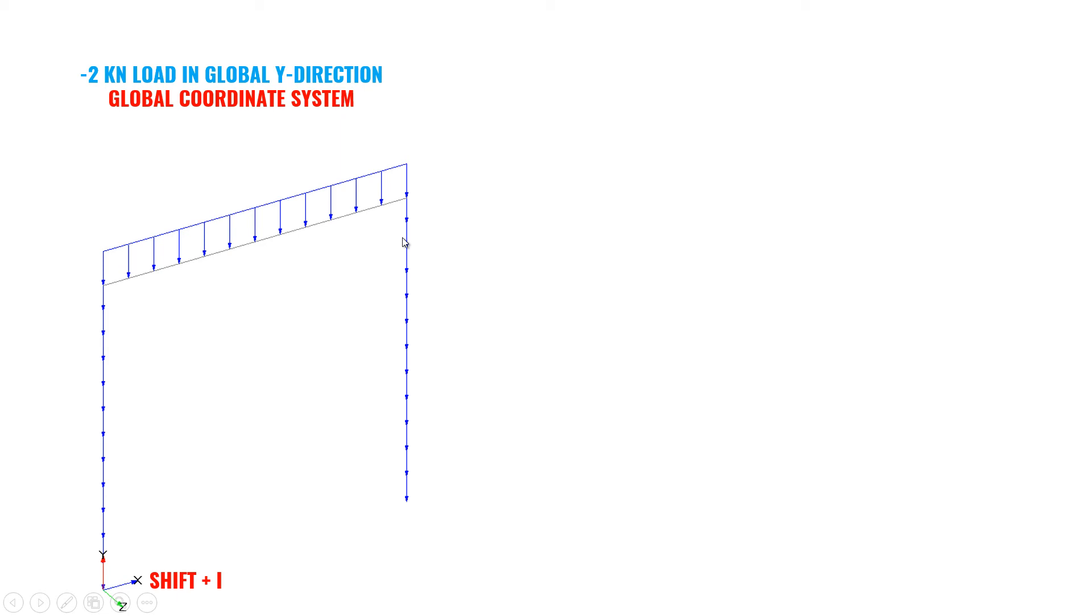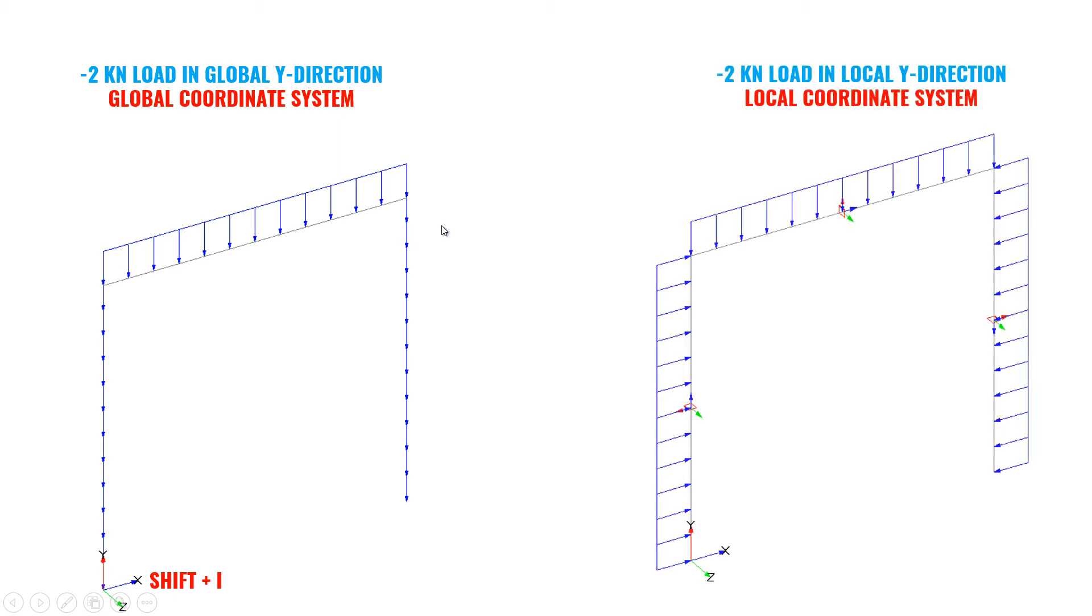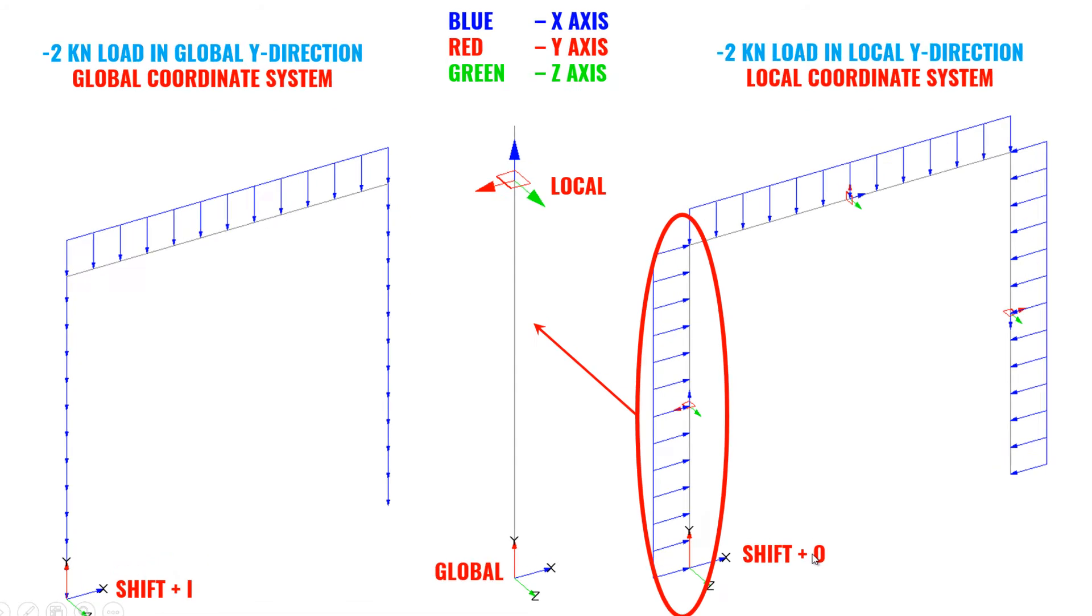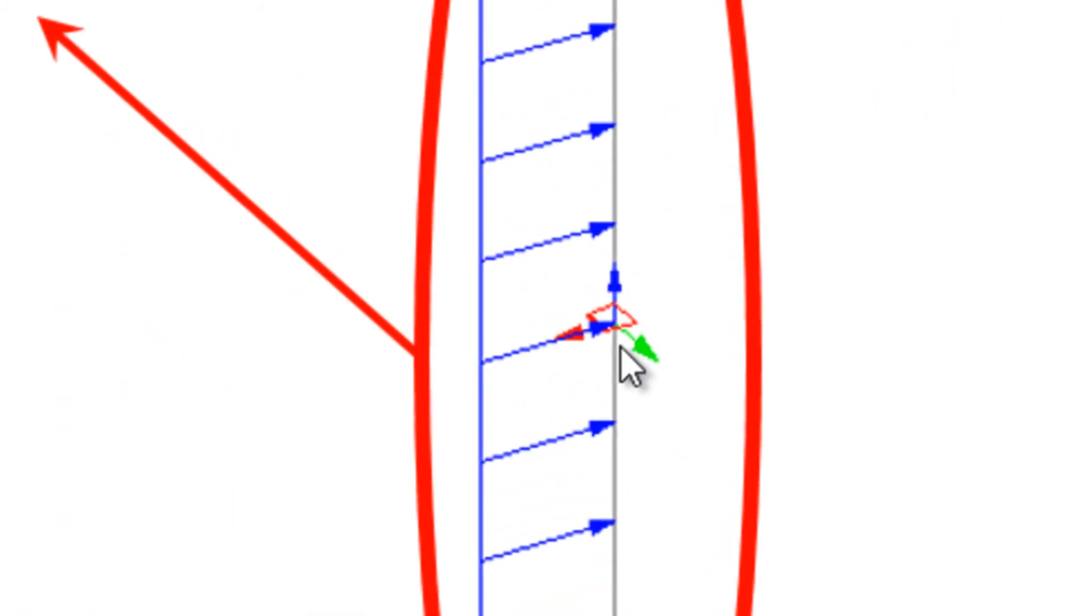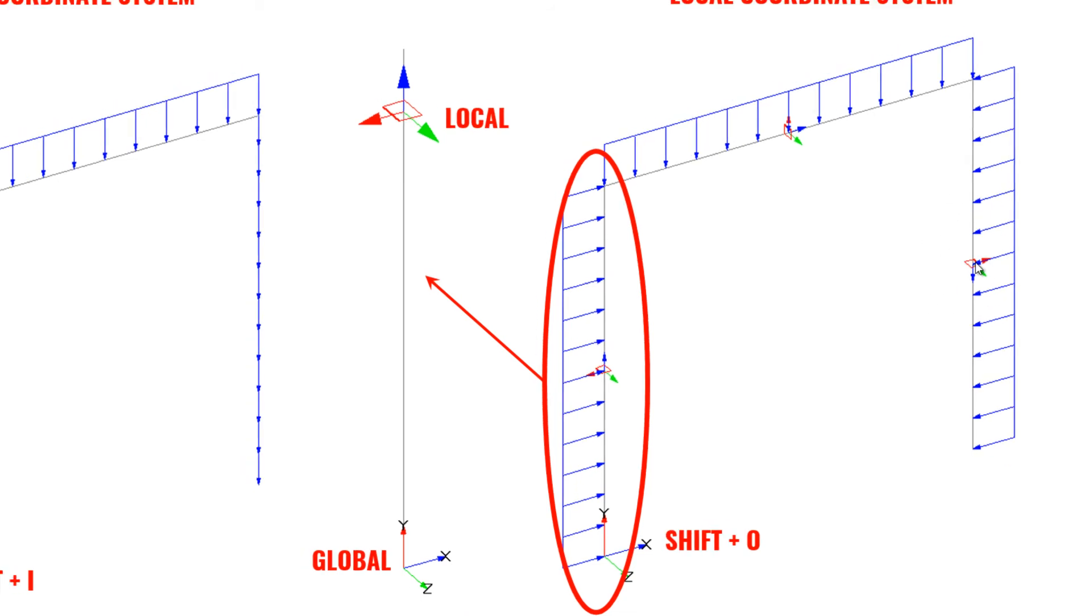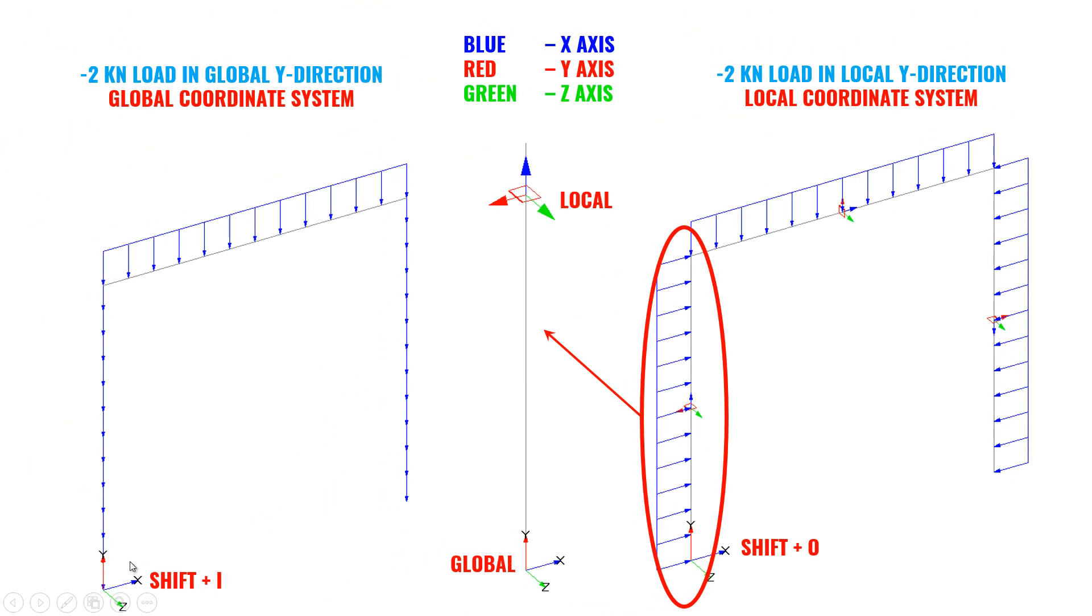Let's see what happens when I apply the same load in local coordinate system. To display the local axis, you need to press shift plus o and you can see local axis in each member. This is the major difference between local axis and global axis.